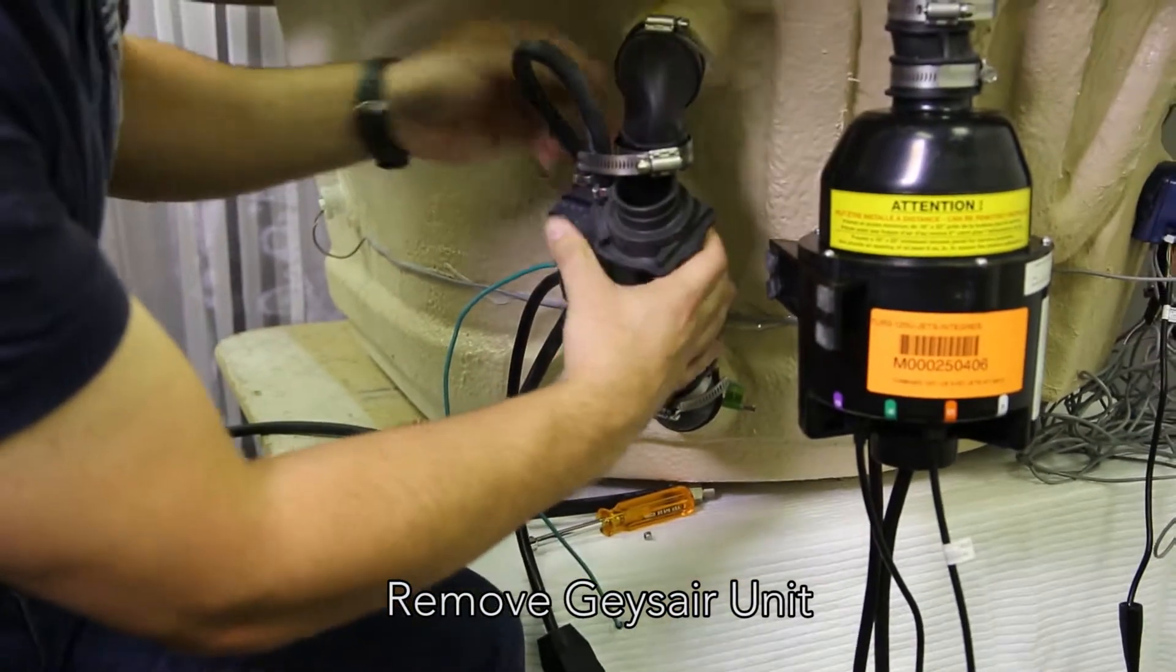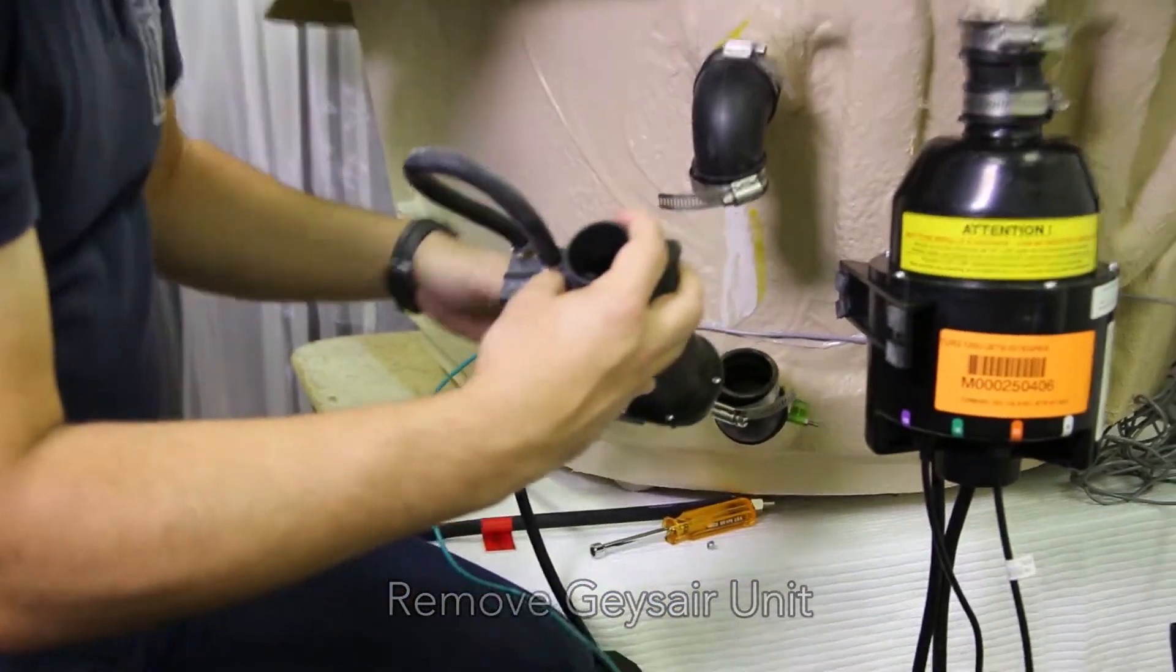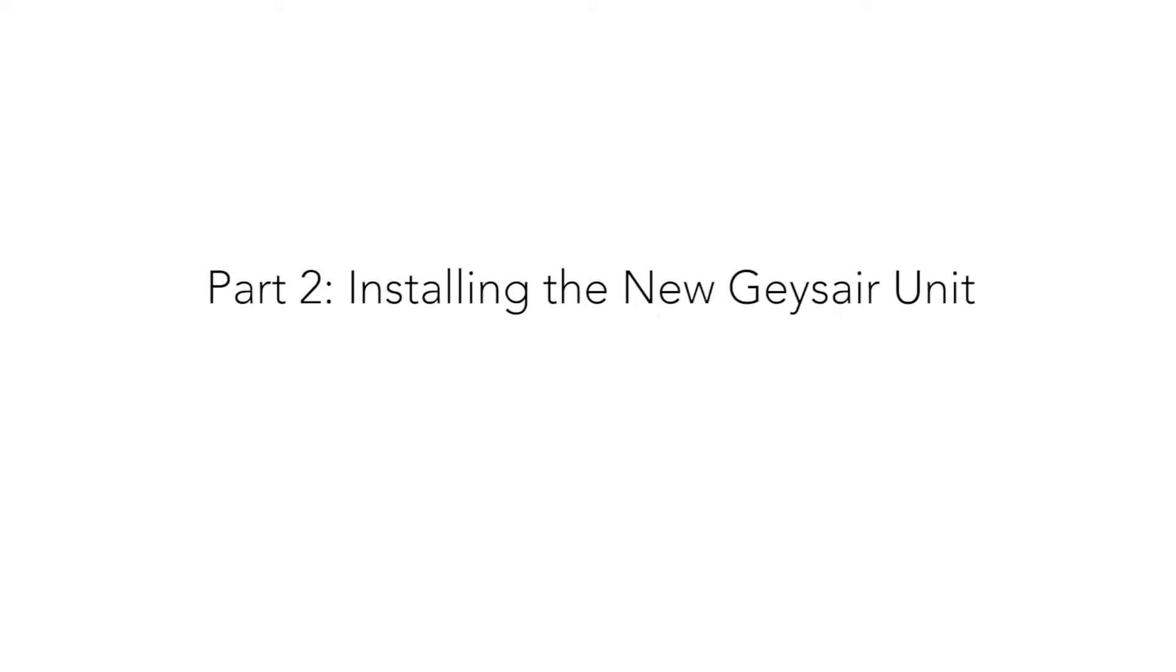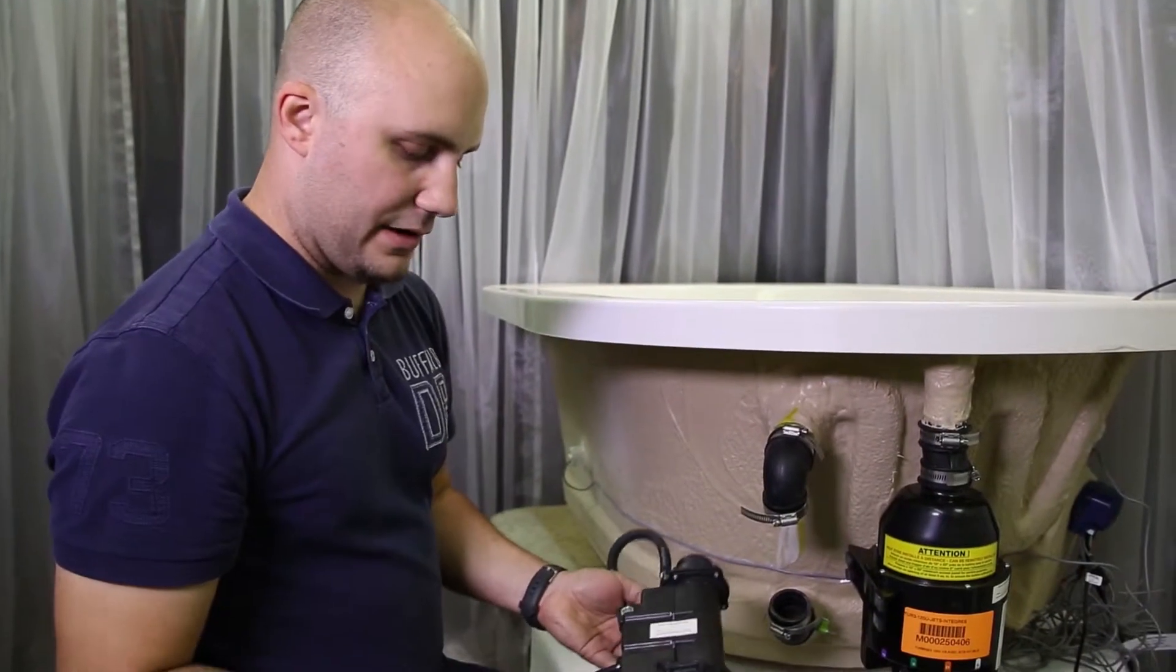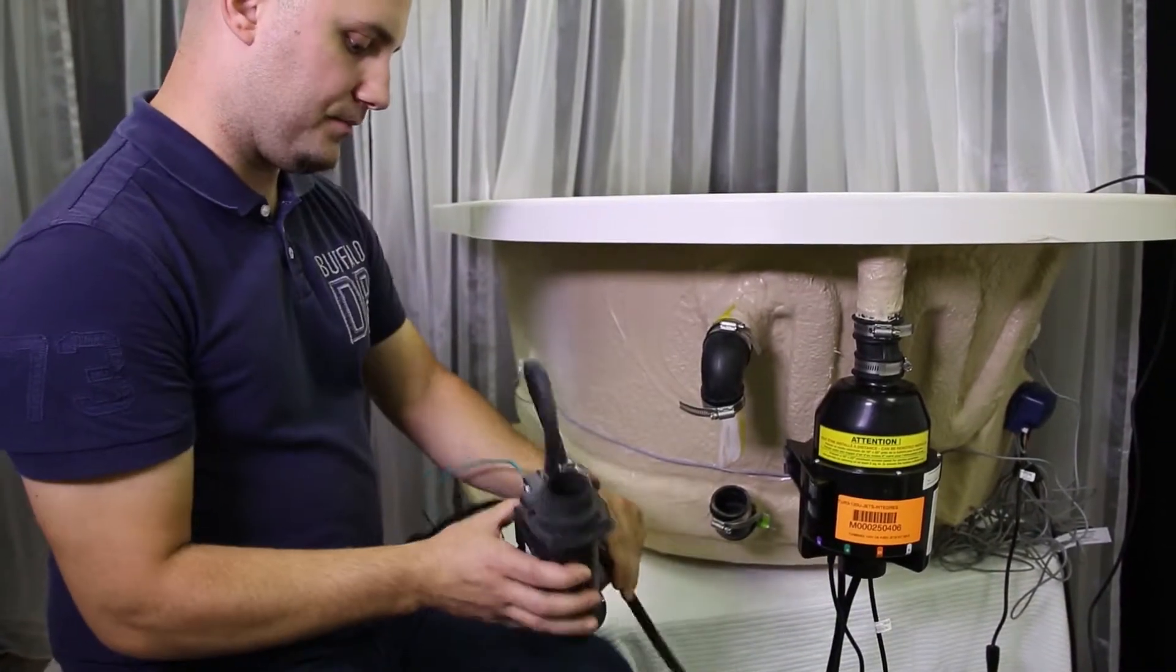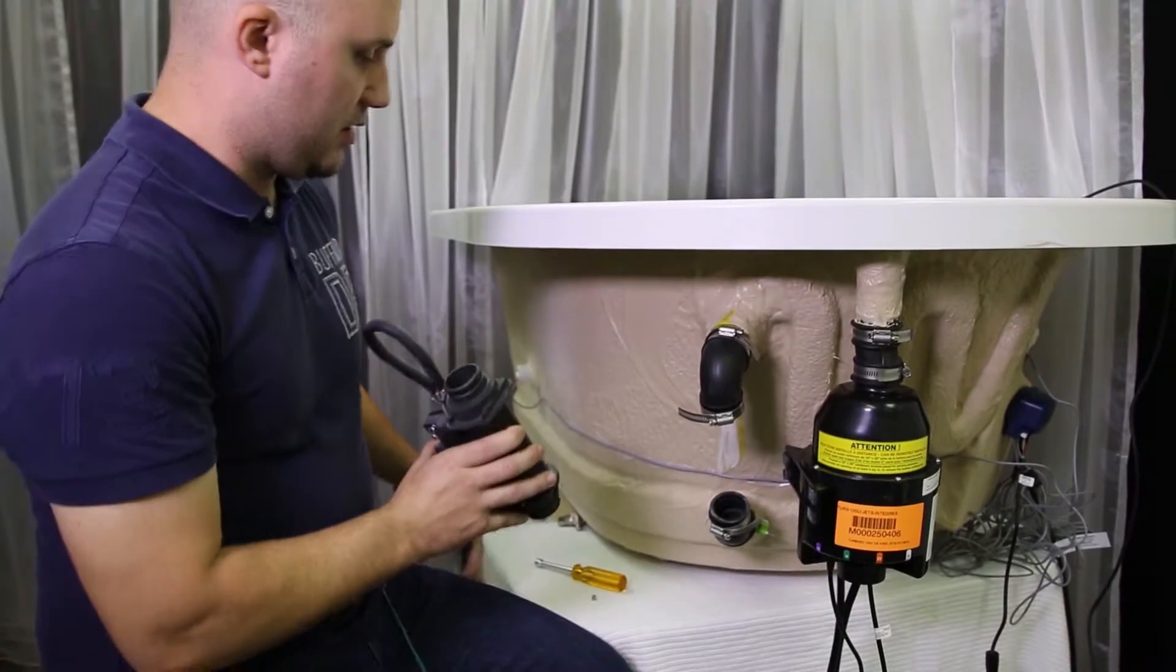So here we go. One side is off. Just pull the other one out, and there we go, it's out. Alright, so now we have our new geyser here. We need to remember what position it was in before. We can go ahead and push it back into place into the rubber boot.